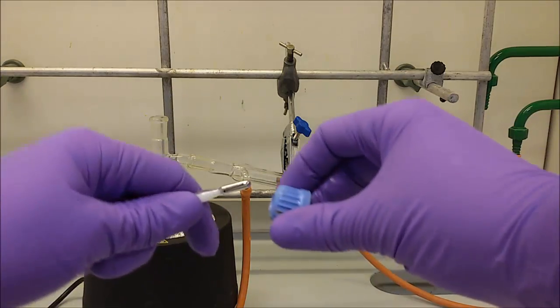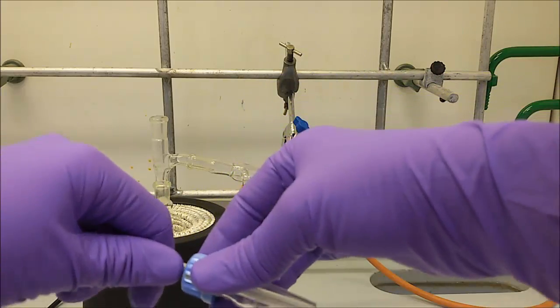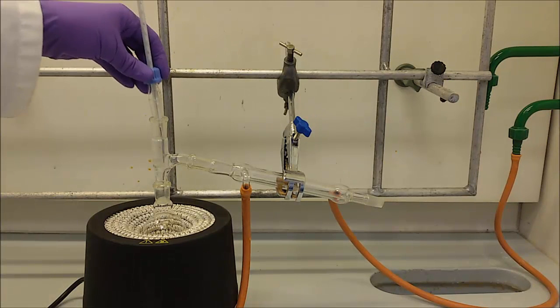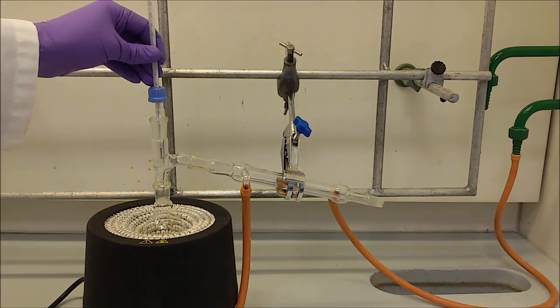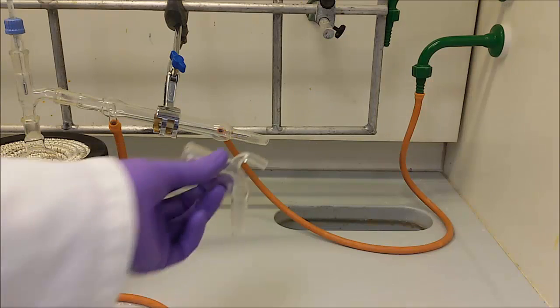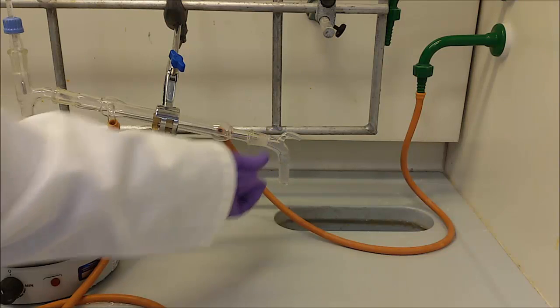Place the thermometer in the still head and the still head in the adapter. Adjust the thermometer position, so it was at the level of the vapors entering the condenser. Now place the receiving adapter and a beaker in which the condensed liquid will be collected.